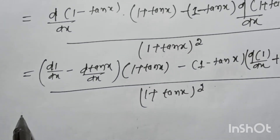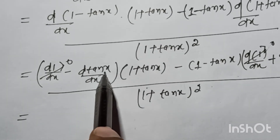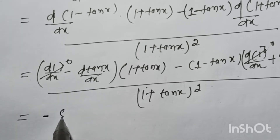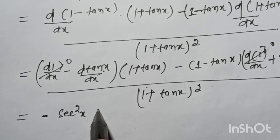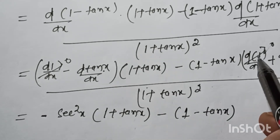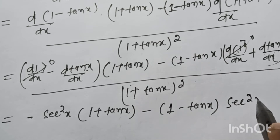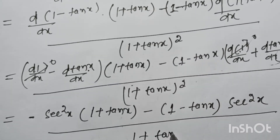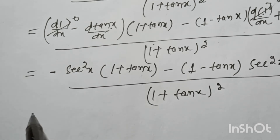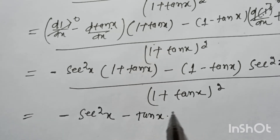Any constant has derivative 0. The derivative of tan x is sec²x. So substituting: we get sec²x terms multiplied with (1 plus tan x) and (1 minus tan x), all divided by (1 plus tan x) squared.